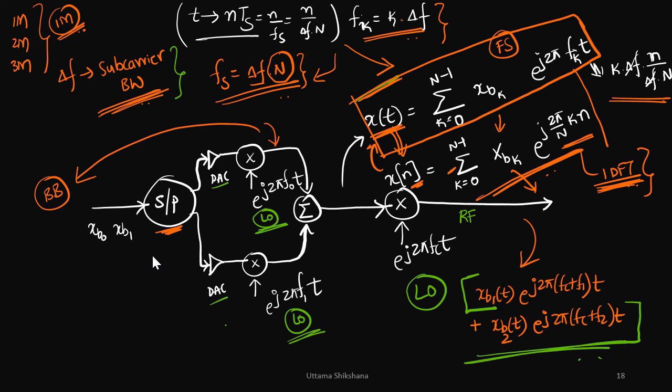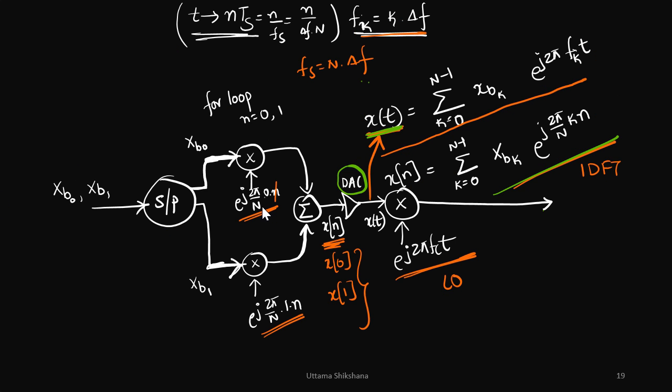So the output of that multiplex will be x of n. To this if I do the DAC, I should be in a position to get x of t. So whatever I just explained, the same thing I will be writing in the circuit form.